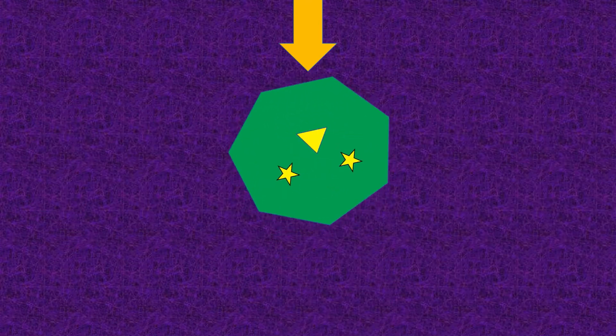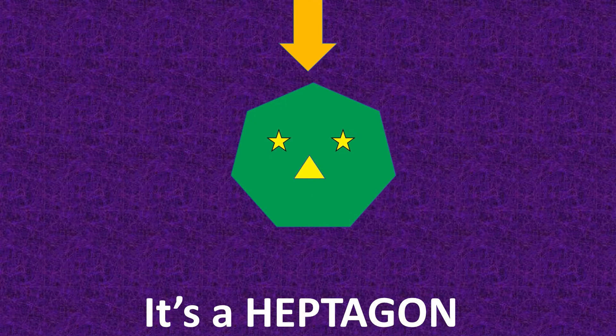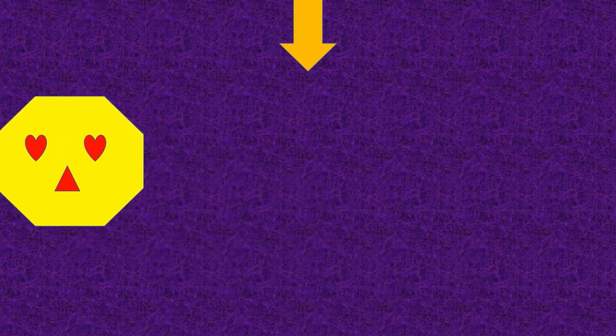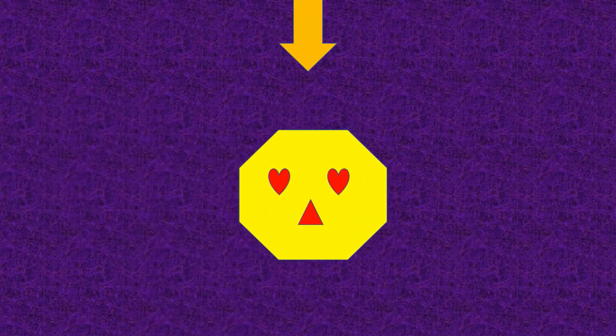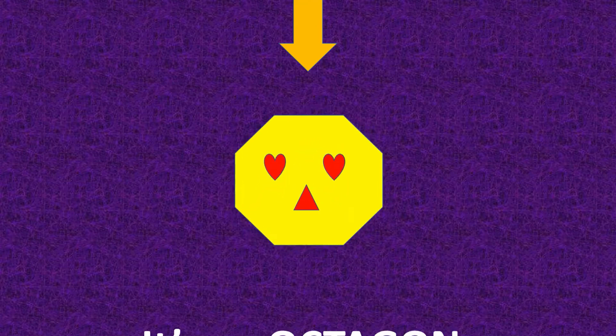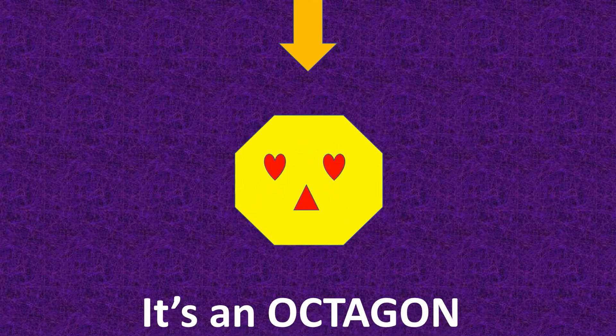What shape is it? It's a hexagon. What shape is it? It's an octagon.